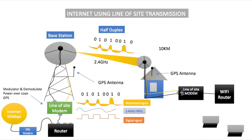To avoid collisions, they use GPS synchronization. There's a yellow cable going to a GPS antenna on each end, so both modems communicate with a GPS satellite. When the subscriber modem wants to transmit, it goes into transmit mode and sends that information to the GPS satellite. The satellite then relays that information to the base station modem, switching it to receive mode. Likewise, when the base station wants to send data back to the subscriber, the satellite switches the subscriber modem from transmit to receive.